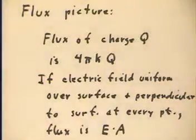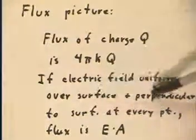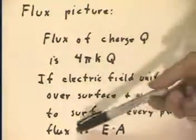If the electric field happens to be uniform over the surface and also perpendicular to the surface at every point, the flux has to be E times A.